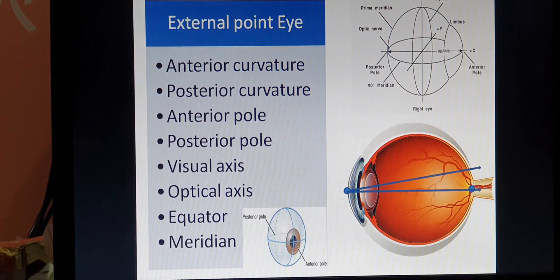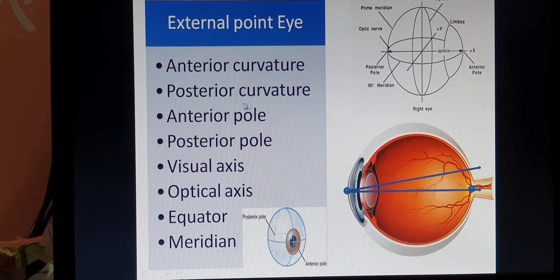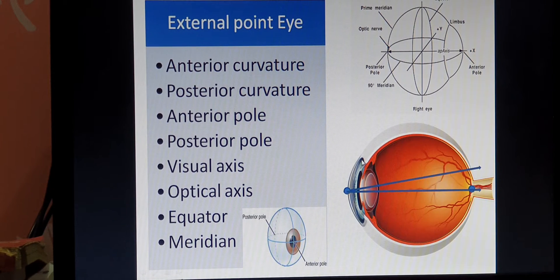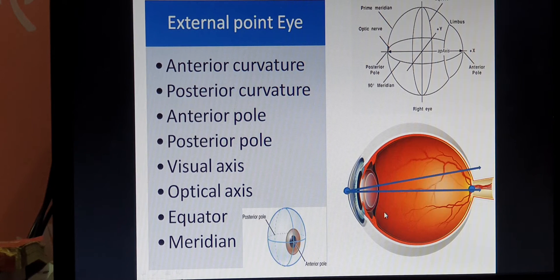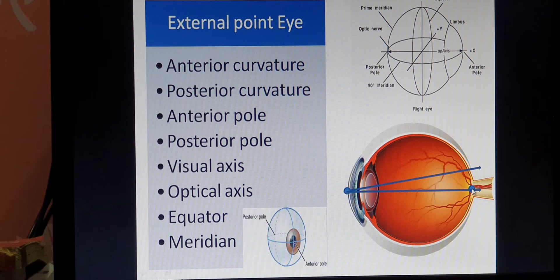The external points on the eyeball: first is the anterior curvature and the posterior curvature. Since it is a ball-like structure, anteriorly there is a curve and posteriorly also a curve. The anterior curvature is related to the cornea, so it is called the corneal curvature, and the posterior curvature is related to the sclera, called the scleral curvature. The center of the anterior curvature is called the anterior pole, and the center of the posterior curvature is called the posterior pole.